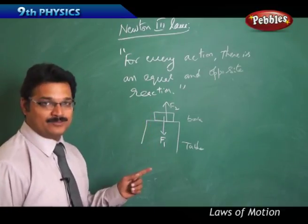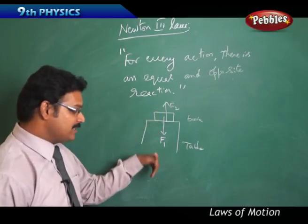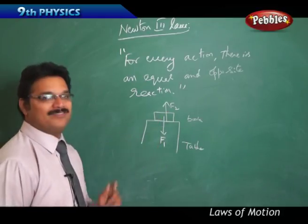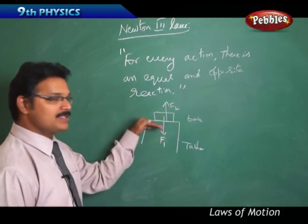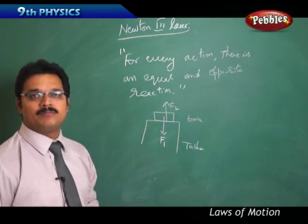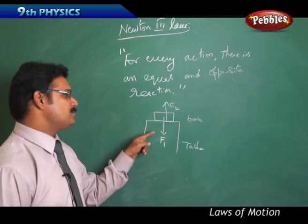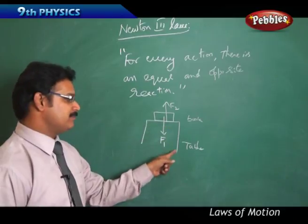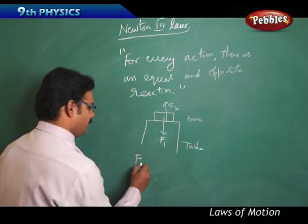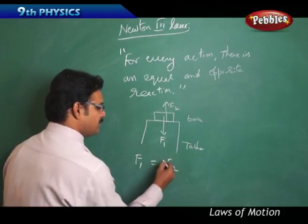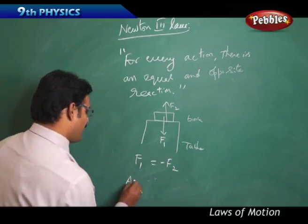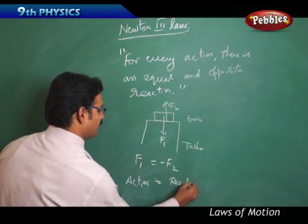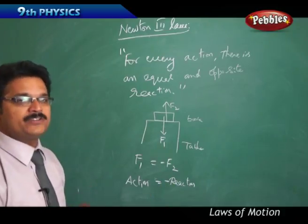If F1 is more than F2, the book would break through the table or fall to the floor. If F2 is greater than F1, then as soon as you place the book on the table, the book would fly away. But both cases are not happening because however much force is applied in the downward direction, the same amount of force is applied by the table on the book. So F1 is called action and F2 is called reaction — they are action-reaction forces.